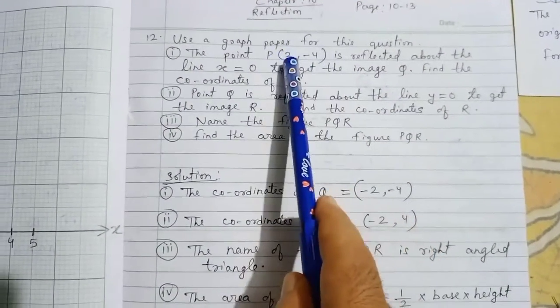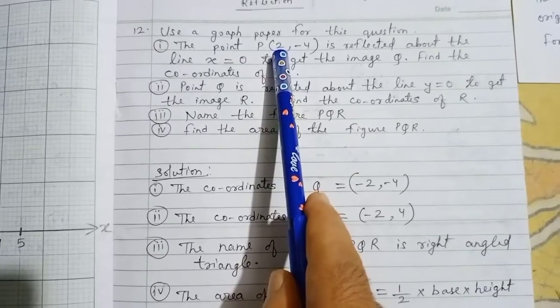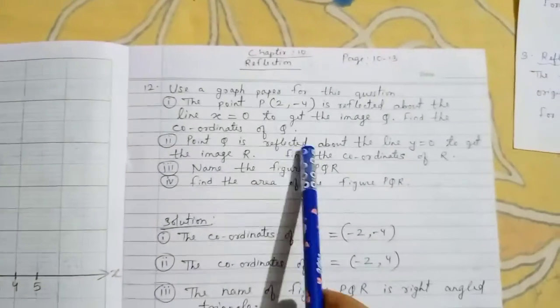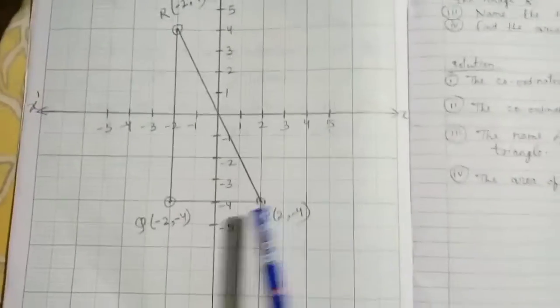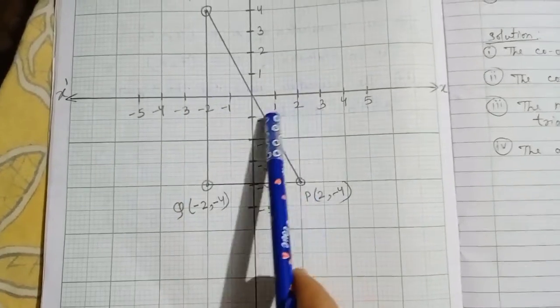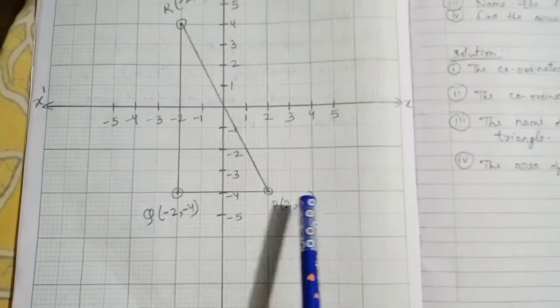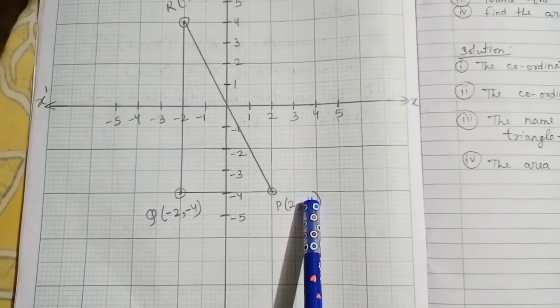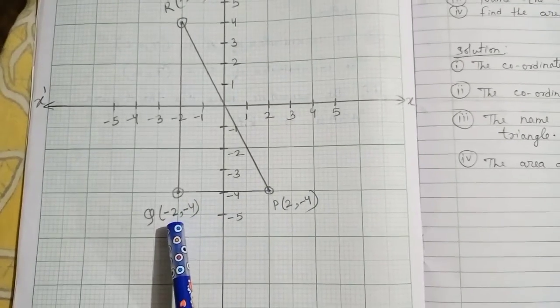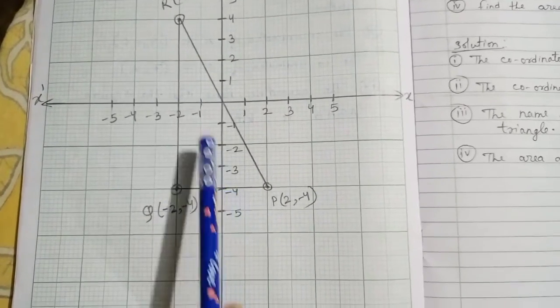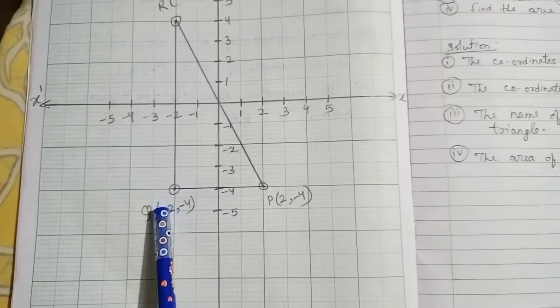Reflecting in the y-axis, the first value changes: P(2,-4) becomes Q(-2,-4). Plot P: +2 on x-axis and -4 on y-axis. After reflecting across x=0, Q is at minus 2 on x and minus 4 on y. The coordinates of Q are (-2,-4).